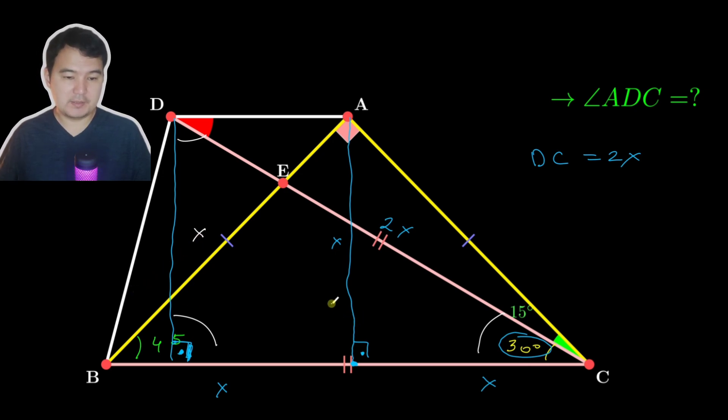Now you can see that the distance between DA and BC is the same, X here and X here, which makes DA parallel to BC. So what is angle ADC? Since this is 30 degrees, this will also be 30 degrees.